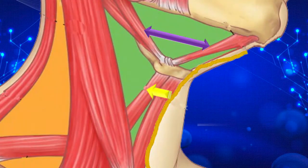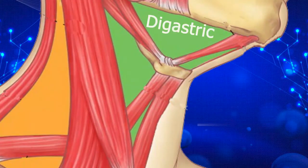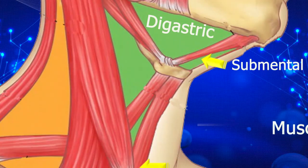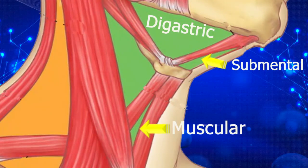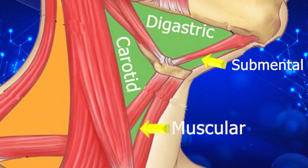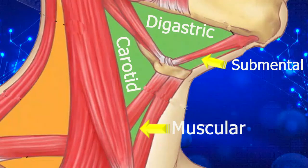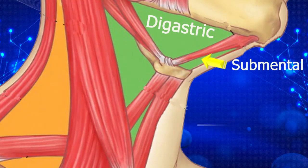These smaller triangles are: one, the digastric triangle; two, the submental; the muscular; and the carotid triangles. In the suprahyoid area, we will be seeing two of these triangles. These triangles are the submental and submandibular triangle, also called the digastric triangle. We will start with the digastric triangle.